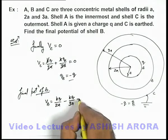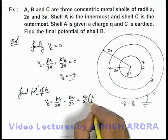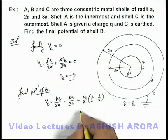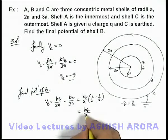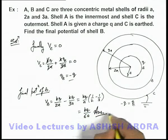And here if we simplify, it will be kq/a times (1/2 - 1/3). On simplifying, this will simply give us kq/6a, which will be the final potential of shell B. That will be the answer to this problem.